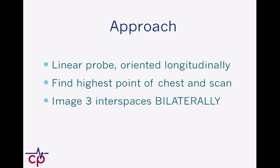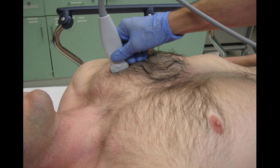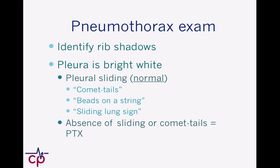Scan on both sides because you want to have a comparison. We're looking for the rib shadows, and then what we're trying to identify is this pleura, which will show up as a bright white linear structure that will have some sliding.